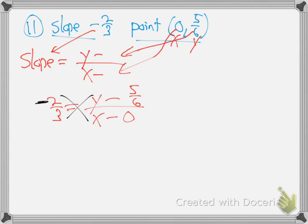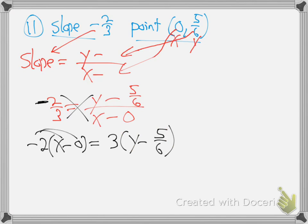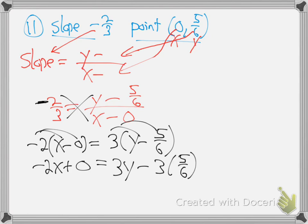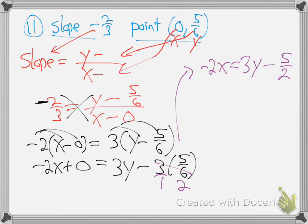When we cross multiply, where does the minus sign go? I usually just put it on the top number — it can go on the top only or the bottom only, but not both, because a minus on a fraction is just one minus. Not two minuses — that would be positive. So we get minus 2 times x minus 0 equals 3 times y minus 5/6. Distribute: minus 2x. Distribute on the right: 3y minus... Now, 3 times 5/6 — any time a whole number interacts with a fraction, put it over 1. 3 goes into 6, cross cancel, 2 times. So we have minus 2x equals 3y minus 5 halves.